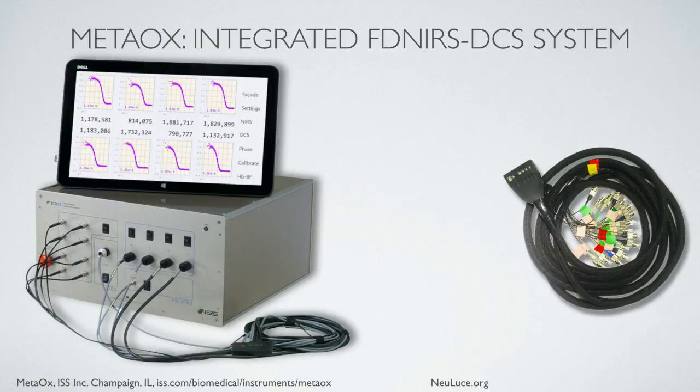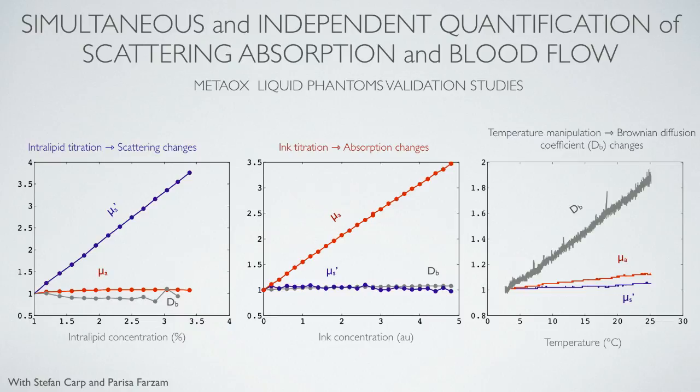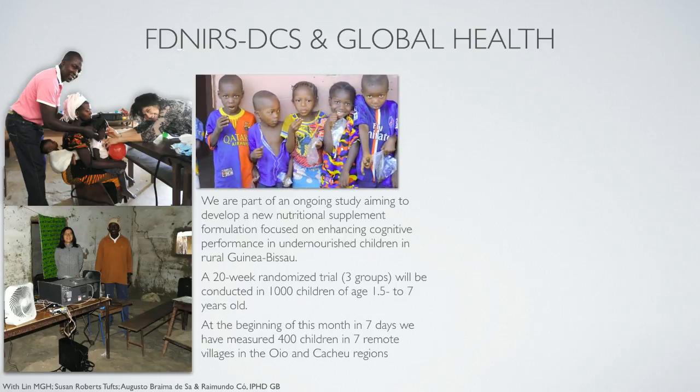Because everything is simultaneous, we also wanted our sensors to be co-localized. So we co-localized sources and detectors for the two technologies in the same spots. With this system, simultaneously, we can not only separate absorption and scattering, but also separate blood flow — or in the case of a liquid phantom, Brownian diffusion — from absorption and scattering. In addition to using this device in Boston, we brought it to Africa.